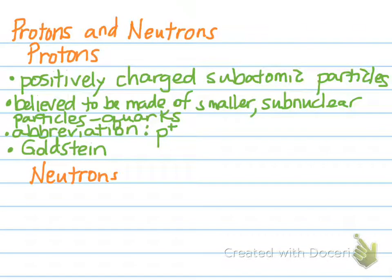Protons are positively charged subatomic particles. They are believed to be made of smaller subnuclear particles — subnuclear meaning within the nucleus of the atom — and those particles are called quarks. Our abbreviation is p⁺ and Goldstein is typically given credit for having discovered the proton.